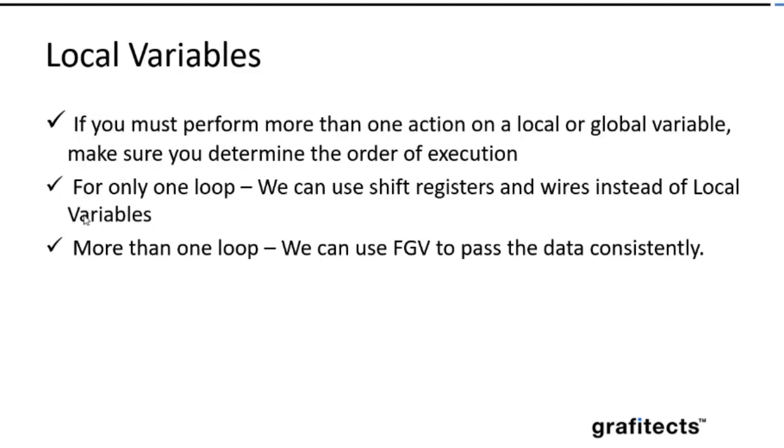These are the important points for local variables. If you must perform more than one action on a local or global variable, make sure you determine the order of execution. If not, it is going to be difficult. If you are using only one loop, we can use shift registers and wires instead of local variables. If you are using more than one loop or multiple loops that is running in the same VI, you can consider to use FGVs.